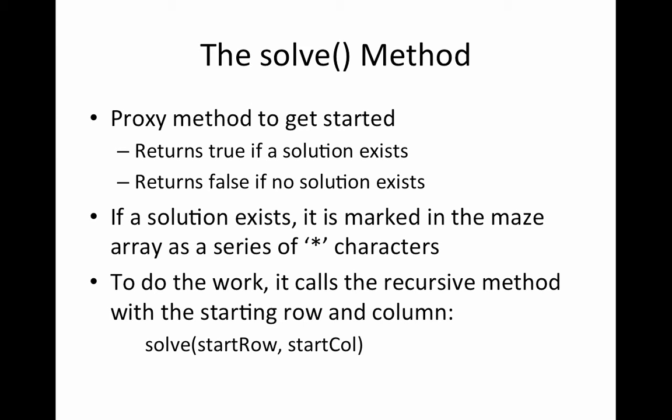To do the work, it will call the recursive method that will take as arguments the starting row and column. So this will be the private method, the recursive method that will actually be doing the work. Now if a solution does exist, we want it to be marked in the maze array as a series of star characters, as we have already seen at the demos.